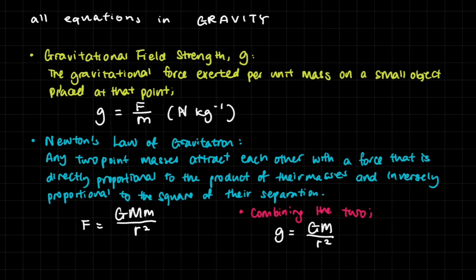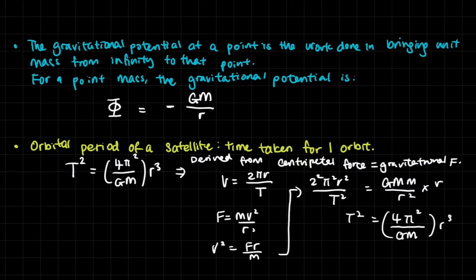For gravity, there isn't that much you need to memorize, but you have to be able to distinguish what gravitational field strength is and how it differs from gravitational force. You also have to distinguish what gravitational potential is and how it's different from gravitational potential energy. These things come down to memorizing definitions and understanding which quantity is measured per unit value and which isn't. You can do that just by revising it a couple of times — it really isn't that difficult.